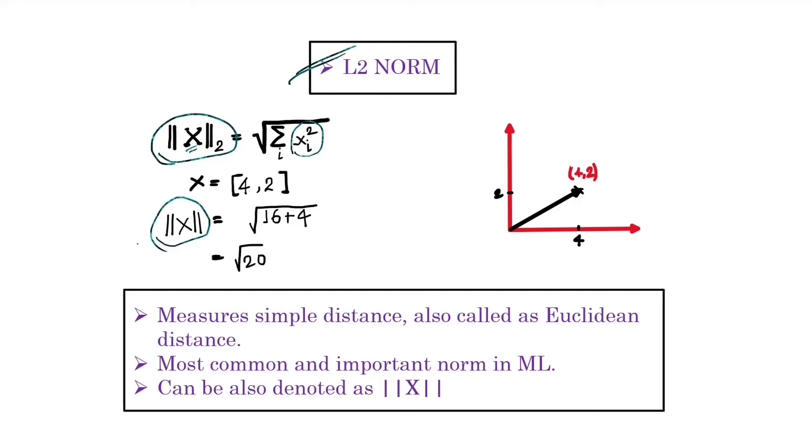Let's try to understand this with an example of the vector x = [4, 2]. In the first step, we are taking the square of each element. If we sum them up, we get square root of 20, which is the L2 norm value for this vector.